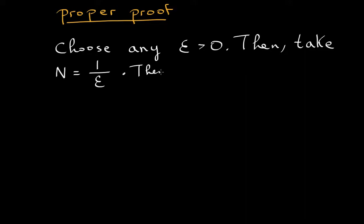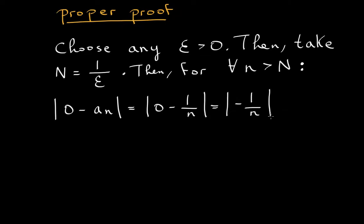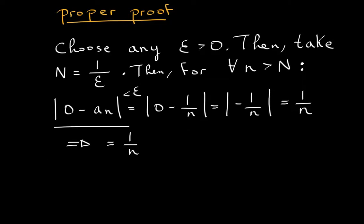Then, for all little n greater than N, you start writing your equation. You will have: zero minus a sub n equals zero minus 1 over n, which equals negative 1 over n, which equals 1 over n. We know that this whole expression has to be less than epsilon, but we can't just write 'less than epsilon' and be done — that means nothing. We have to use the information that we have.